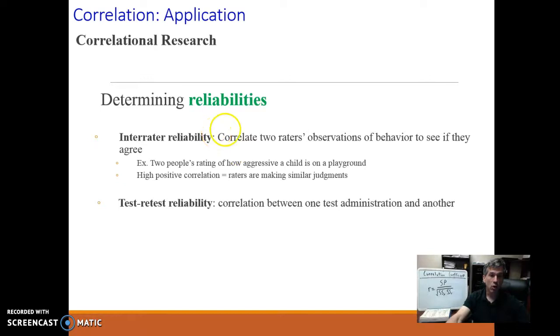The easiest way to do that is to measure both of our raters and correlate their scores. If they're highly positively correlated, we have good inter-rater reliability. If they're not, we don't. So we could have two people rate how aggressive a kid is on a playground. If they are consistently rating that behavior similarly, there'll be a high positive correlation, and your inter-rater reliability is good.